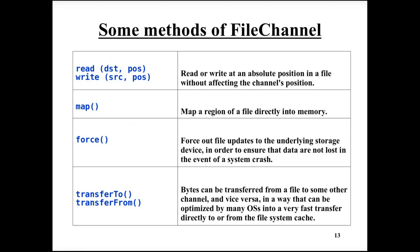Some important methods of the file channel: read and write are used to read or write to a specified position in the file. Map is used to create a memory mapped file. Force empties the underlying buffers, forcing output to the file. The methods transferTo and transferFrom can transfer data from one file channel to another and are very fast — usually the transfer is done in the operating system's file system cache.